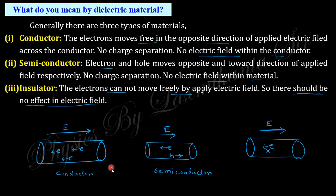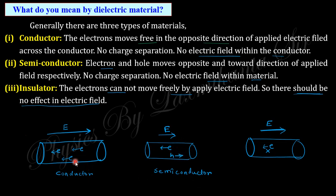In the case of a semiconductor, electrons move opposite to the electric field and holes move in the direction of the electric field. When they are connected, a continuous current flows and no charge separation occurs either. So in both conductors and semiconductors there is no internal electric field generated within the material.